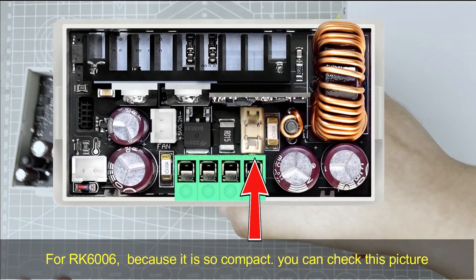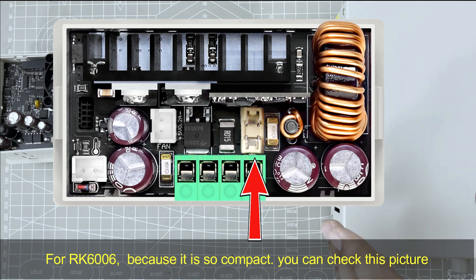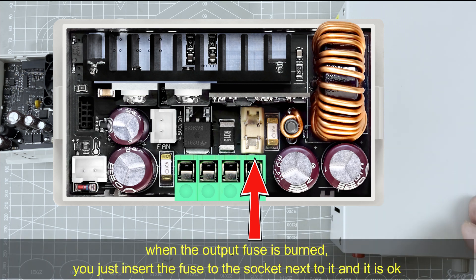For RK series power supply, because it is so compact, you can check this picture. When the output fuse is burned, insert the fuse to the socket next to the output fuse and it is okay, because it is hard to replace the fuse.